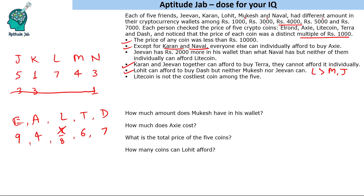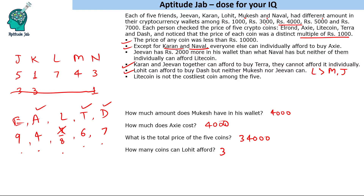How much amount does Mukesh have in his wallet? Mukesh has 4000 rupees. How much does XC cost? XC costs 4000. What is the total price of the five coins? The total is 4000 + 6000 + 7000 + 8000 + 9000 = 34,000. How many coins can Lohit afford? Lohit has 7000, so he can afford Dash, Terra, and XC — three of these coins. This completes the solution.